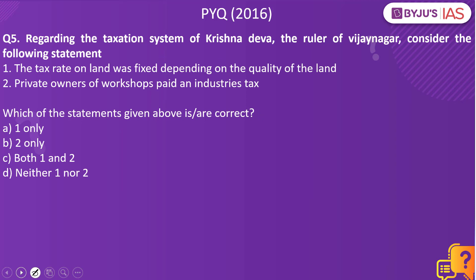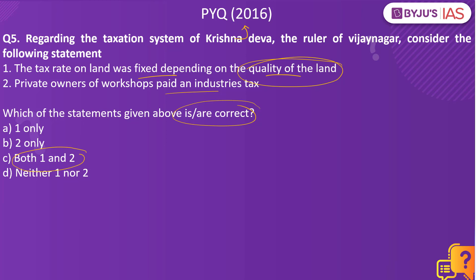Regarding the taxation system of Krishnadeva, the ruler of Vijayanagara — the tax rate on land was fixed depending on the quality of land, and private owners of workshops paid an industry tax. The answer is both 1 and 2 are correct. This is a previous year question from 2016. During the Vijayanagara empire, land tax was the major source of revenue and they had a fixed taxation system based on quality of land. Taxes were also imposed on shopkeepers, farm servants, workmen, and private owners of workshops had to pay industrial tax as well.